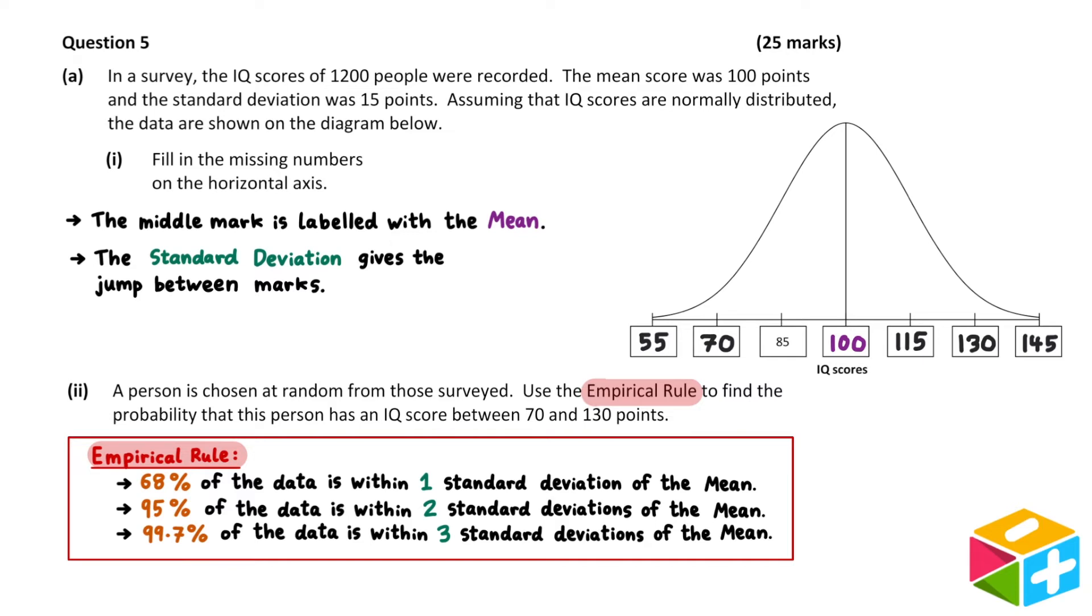It states that 68% of the data is within one standard deviation of the mean. 95% of the data is within two standard deviations of the mean. And 99.7% of the data is within three standard deviations of the mean.